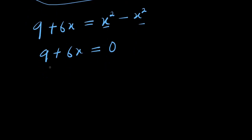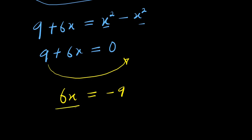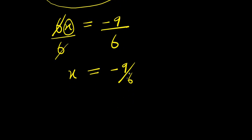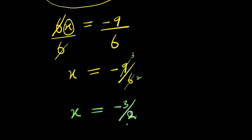So from here, I can decide to move this 9 over here. I have 6x equals negative 9. Divide this by 6 in order to isolate x, divide this by 6, 6 cancels with 6. So I isolate x, and this is negative 9 divided by 6. We can reduce this — 3 can divide both, we have 3 and 2, so this becomes x equals negative 3 divided by 2.